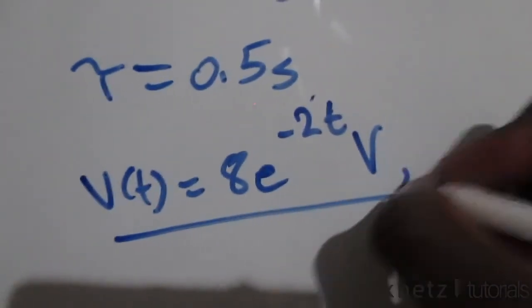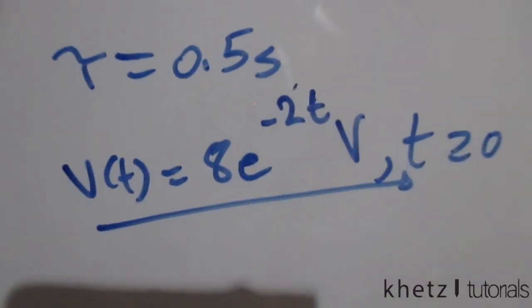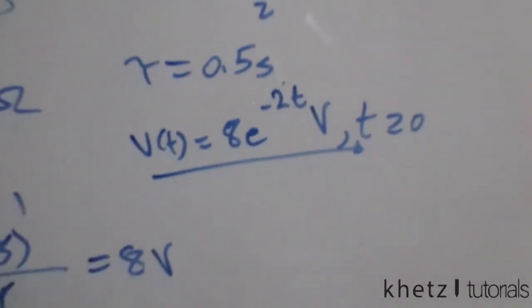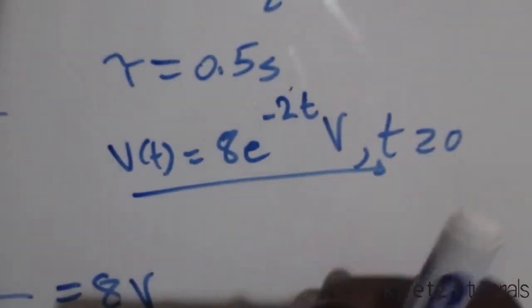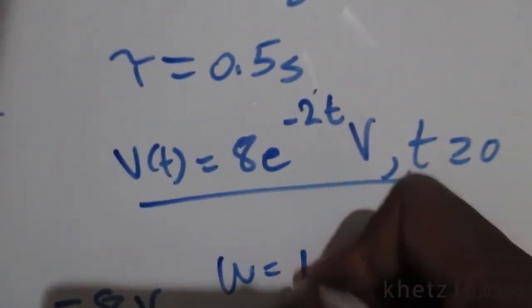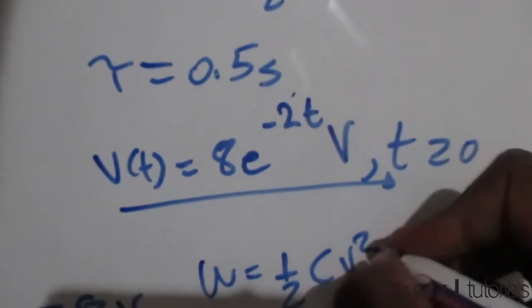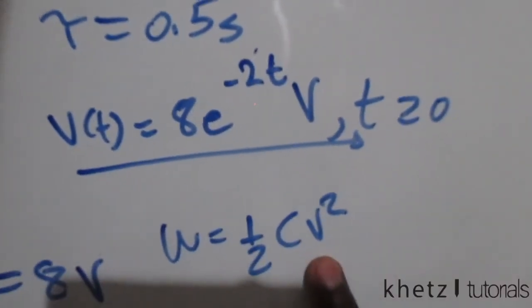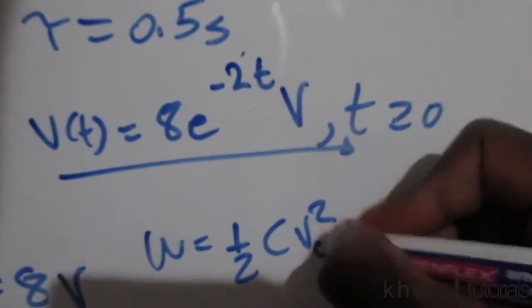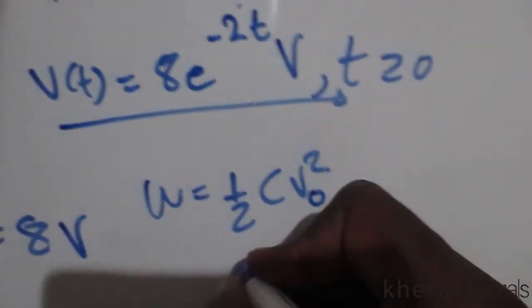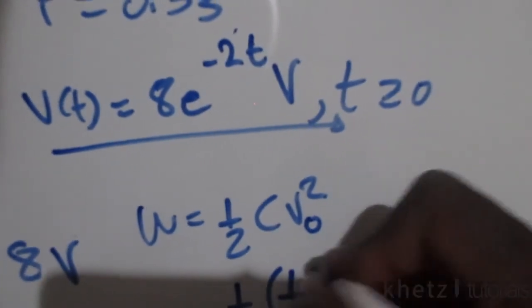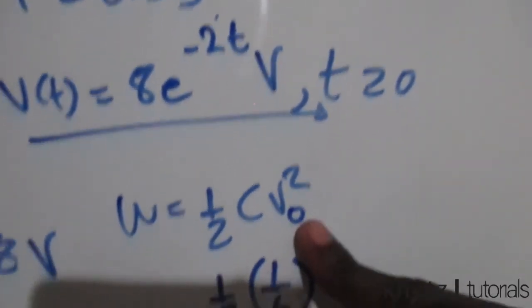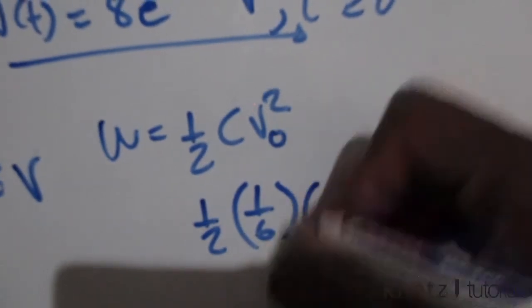Now move on to the second part of the question, which asks us to find the energy at time zero. Energy equals half CV squared. Since we're told it's for time zero, we're going to use the voltage at time zero. We're going to have half C, which is the value of the capacitor, 1 over 6, then we're going to have V0, which is 8.